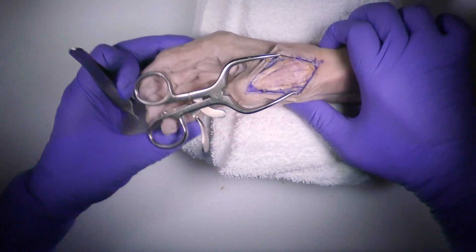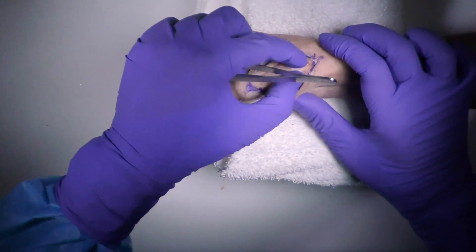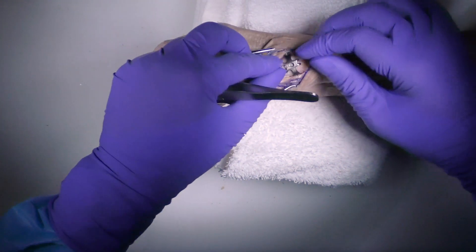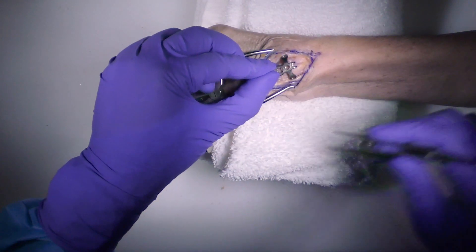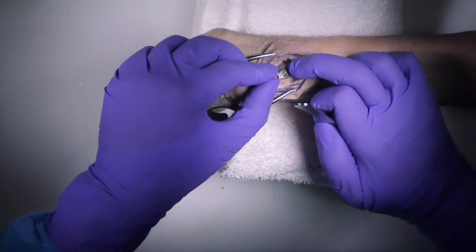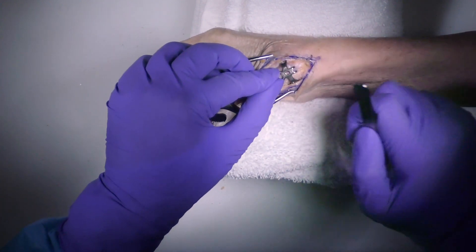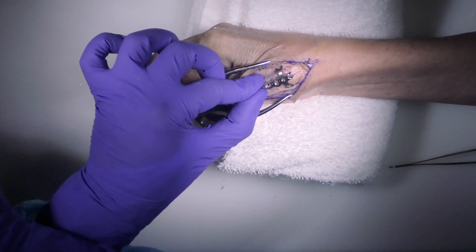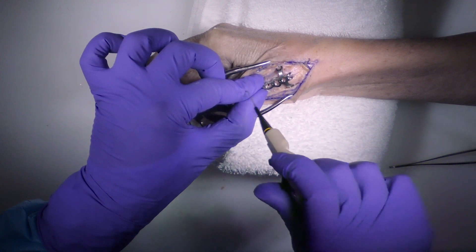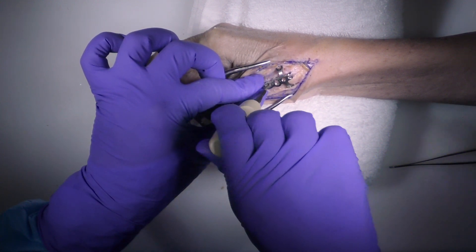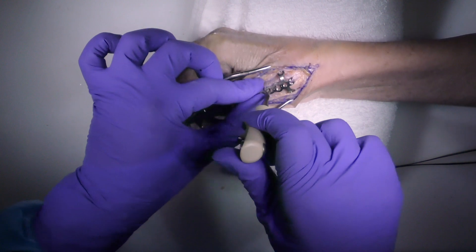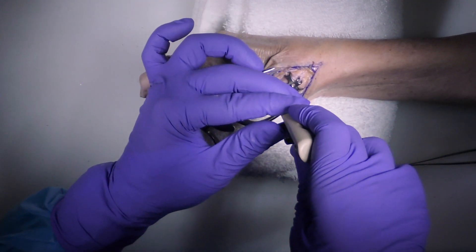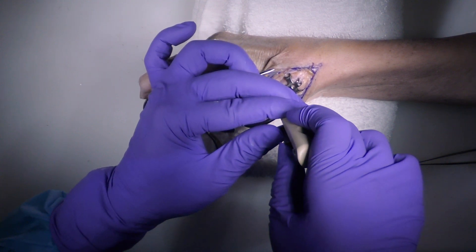Let's say we have the fracture reduced and we're happy with it. Then we apply this plate, which is really meant to neutralize it. These tines are extra-articular, so you want to place them right at the base like so. I put in this sliding hole first so I have the option to bring it proximal or distal. I'm measuring 14 and a half, so I'll take a 15.